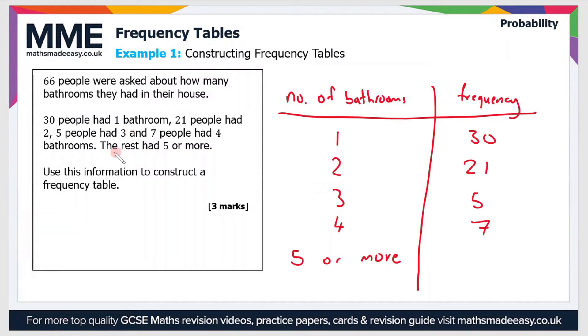It says the rest had 5 or more, and we're told that 66 people were asked in total. To find the rest, we need to total up what we've already put in the frequency column. If you add 30 + 21 + 5 + 7, that is 63. With 66 people in total, the people who had 5 or more is 66 - 63, which is 3. So the last frequency in the table is 3. That's the complete frequency table for this question.